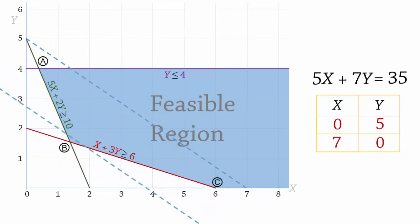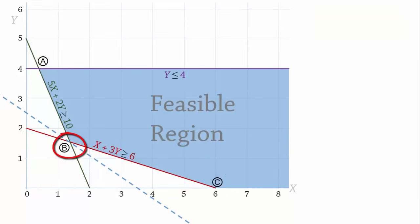So it is obvious that point B is the optimal solution point. We now need to solve the two lines that intersect at point B simultaneously to determine the coordinates at that point. Here are the equations.